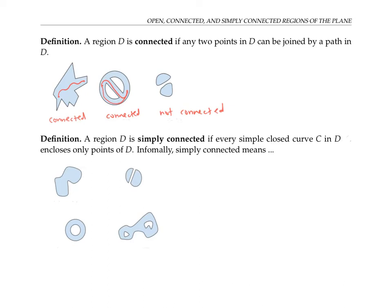Our next and last definition is simply connected. A region D is called simply connected if every simple closed curve C that you can draw in the region D encloses only points of the light blue region. This first example is simply connected, because any simple closed curve that I can draw in the region will only enclose points of the light blue region. The second region is also simply connected — even though it has two components, any simple closed curve that lies entirely in the region will only enclose points of the region.